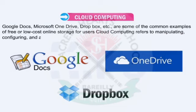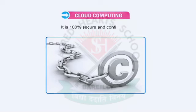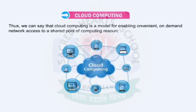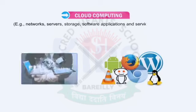Cloud Computing refers to manipulating, configuring, and accessing applications online. Essentially, our files, videos, and photos can be stored in services like Google Drive, Google Docs, OneDrive, and Dropbox — all available over the internet — and we can access them from anywhere. We get a storage facility free of cost. Thus, Cloud Computing is a model for enabling convenient on-demand network access to a shared pool of computing resources — including networks, servers, storage, software applications, and services — that can be provisioned with minimum effort or service provider interaction.